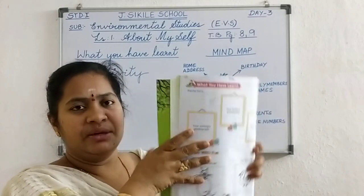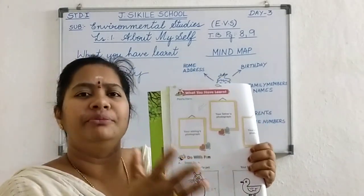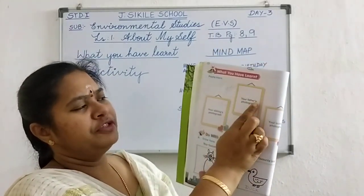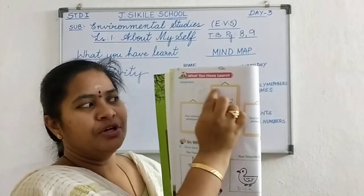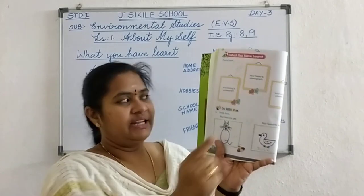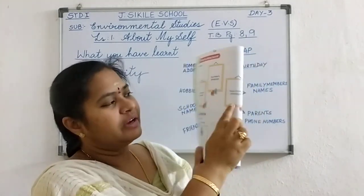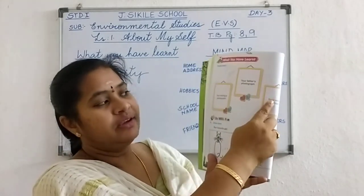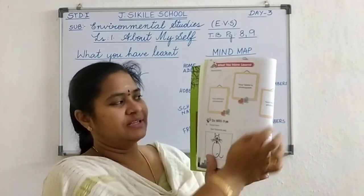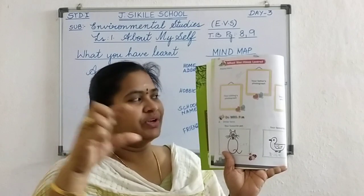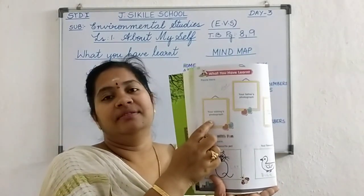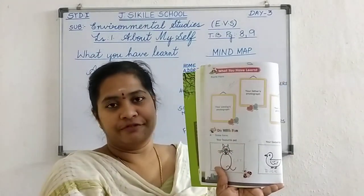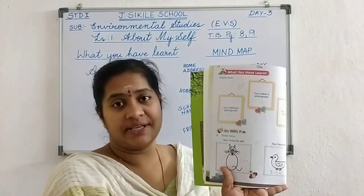Now here, it's very easy — you have already learned this from 2 classes. Here, you have to paste your daddy's photograph in the father box. Here, mother's photograph — paste mummy's photograph, passport size. And here your sibling — if you have a brother or a sister, you can paste their photograph here. You have already pasted your photograph in the front, page 6.